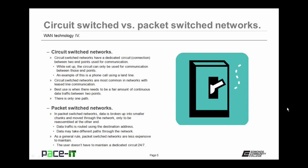In packet-switched networks, data is broken up into smaller chunks and moved through the network, only to be reassembled at the other end. The data is routed using the destination address, and the data may take different paths through the network. As a general rule, packet-switched networks are less expensive to maintain because the user doesn't have to maintain a dedicated circuit 24-7 — they're only paying for what they're using.